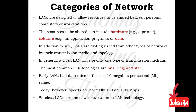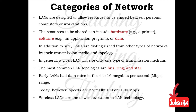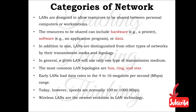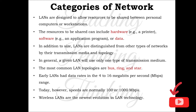In general, a given LAN will use one type of transmission media. The most common LAN topologies are bus, ring, and star. Early LANs had data rates in the 4 to 16 megabits per second range, but today speeds are normally 100 or 1000 Mbps. Wireless LANs are the newest evolution of LAN technology.